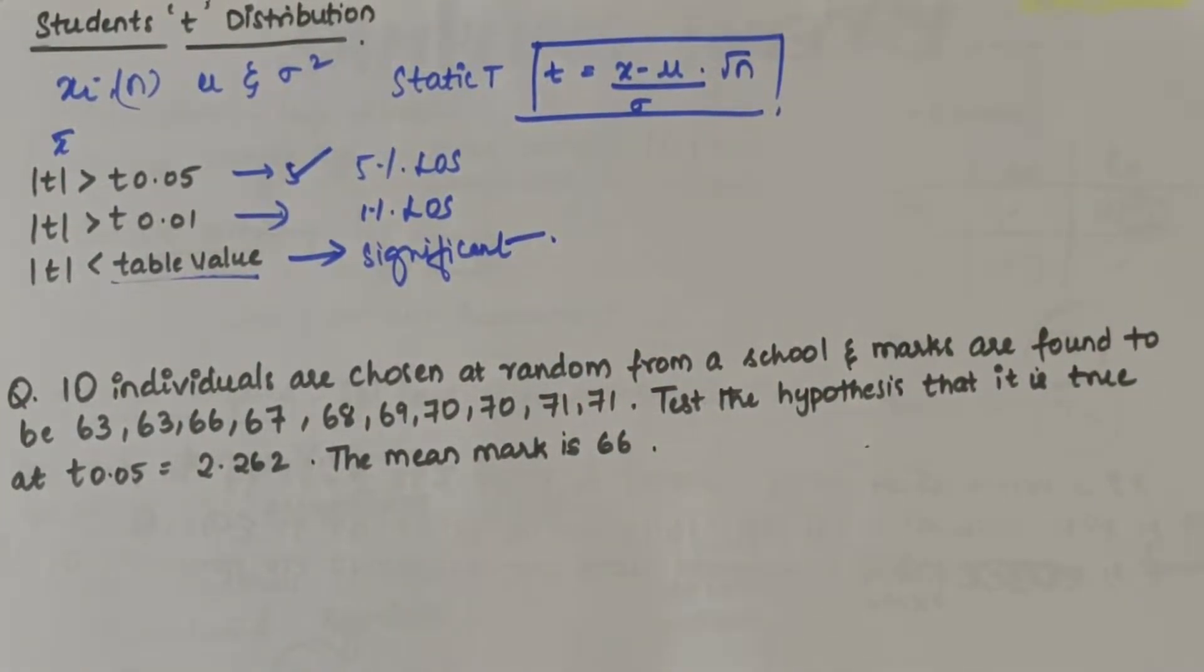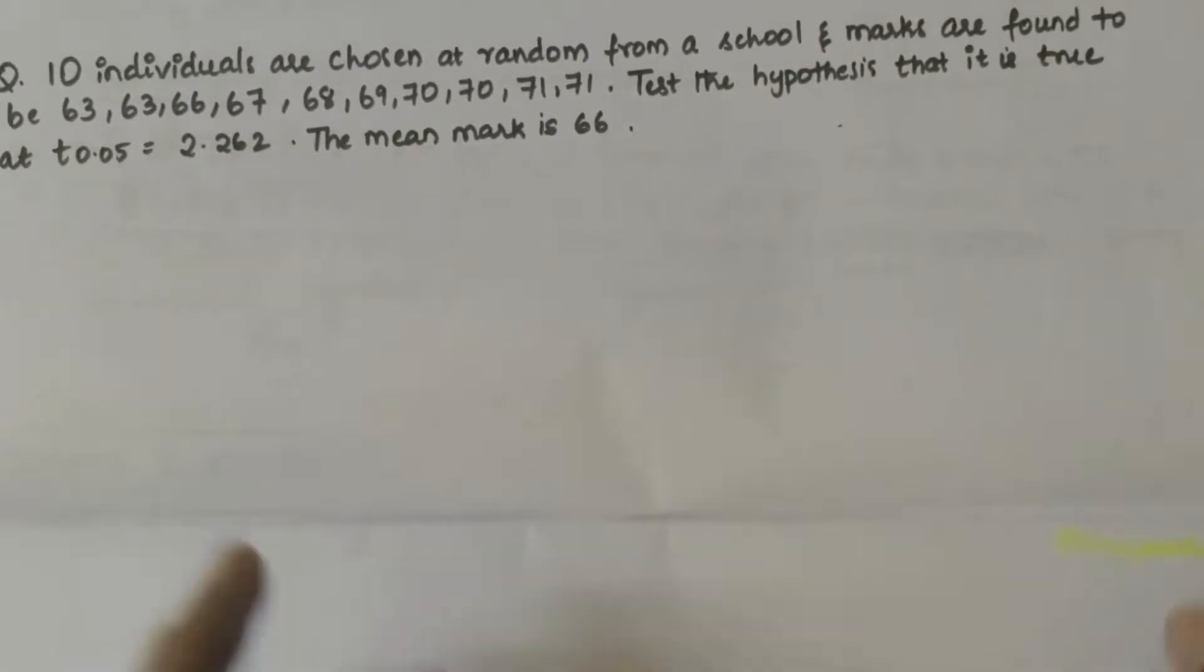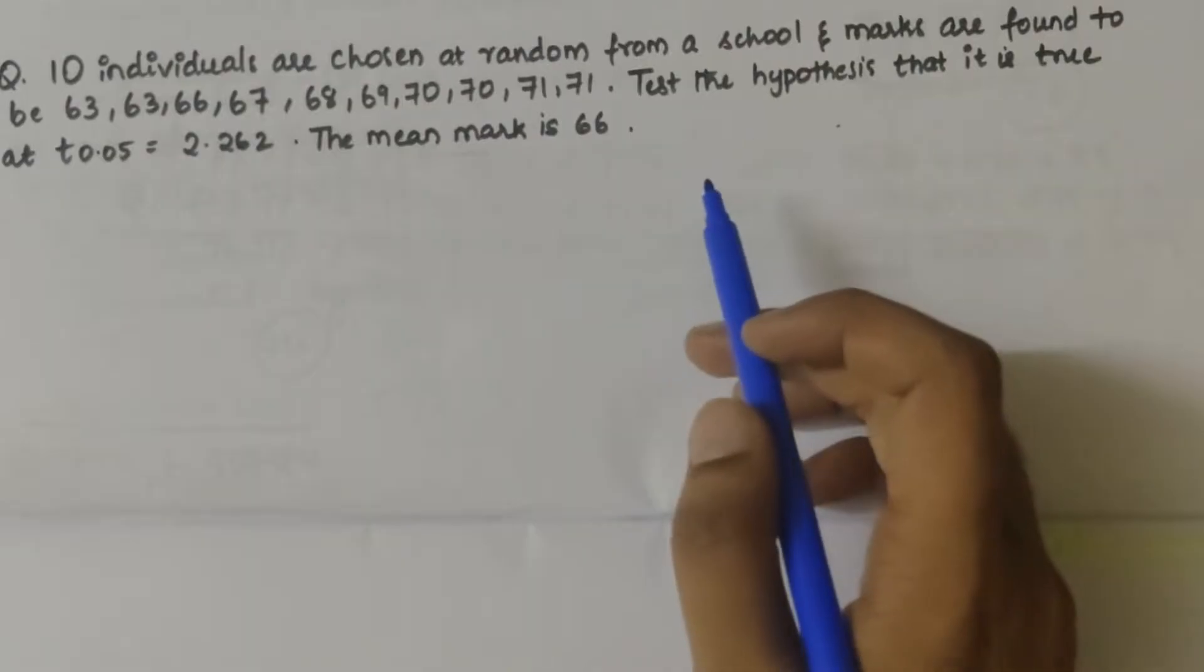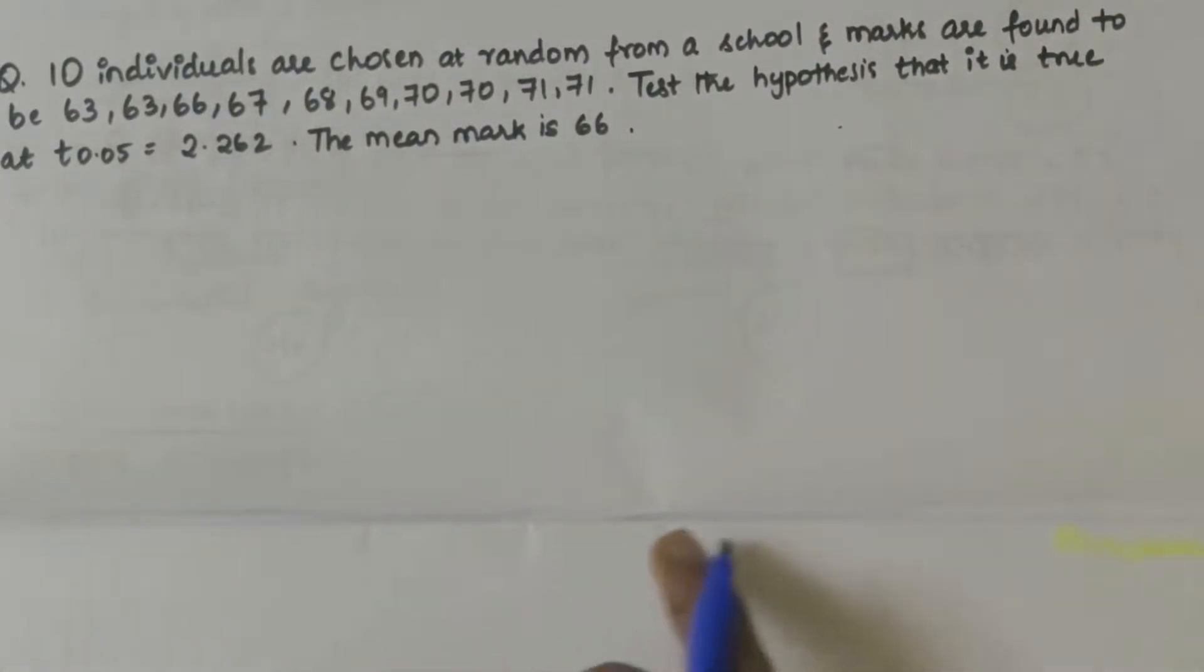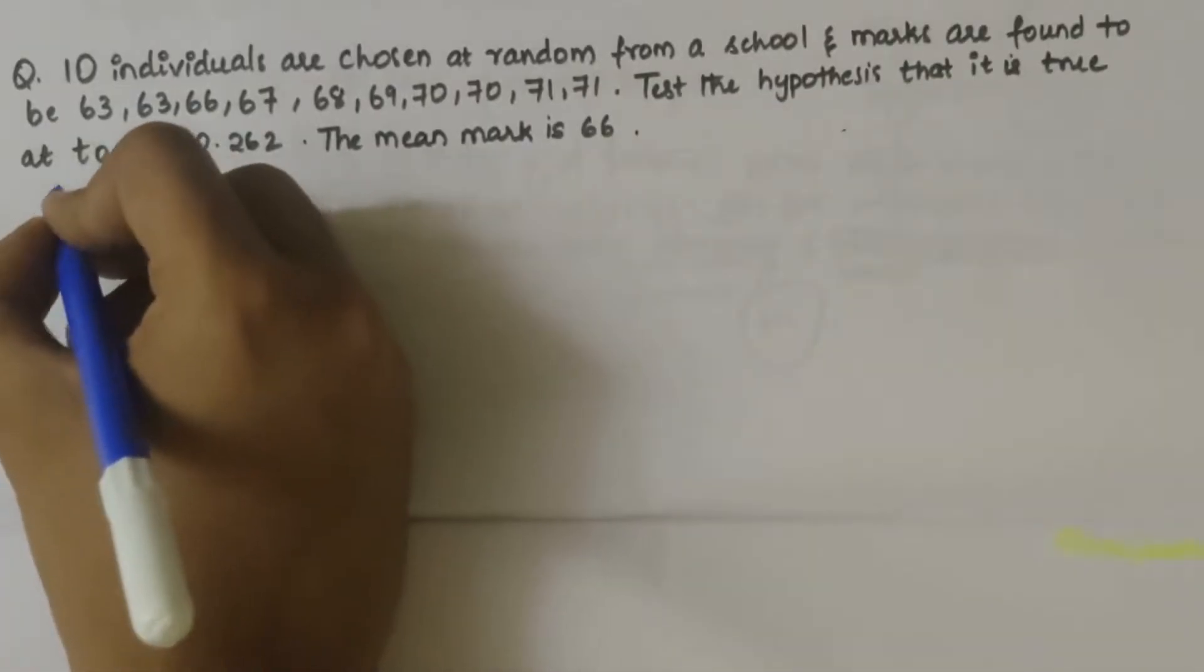Once we solve the numericals we'll get to know how these things are applied. The problem statement says that 10 individual students are chosen at random from a school and marks are found to be 63, 63, 66, 67, 68, 69, 70, 70, 71, 71. Test the hypothesis that it is true at 5 percent level of significance with table value 2.262. The mean mark is given as 66.